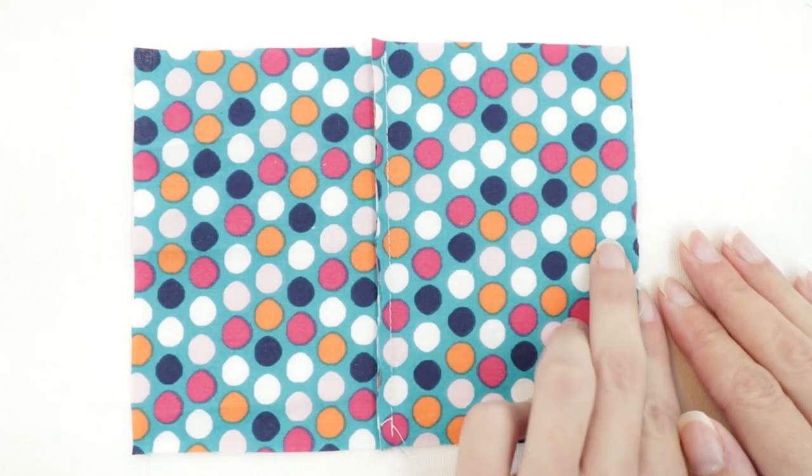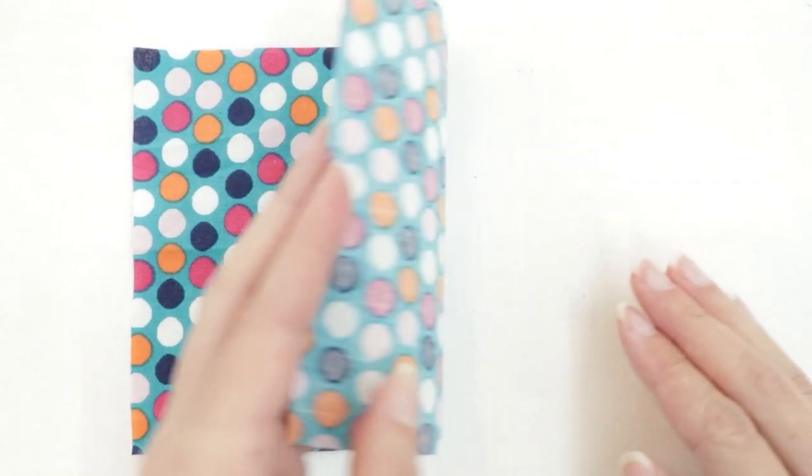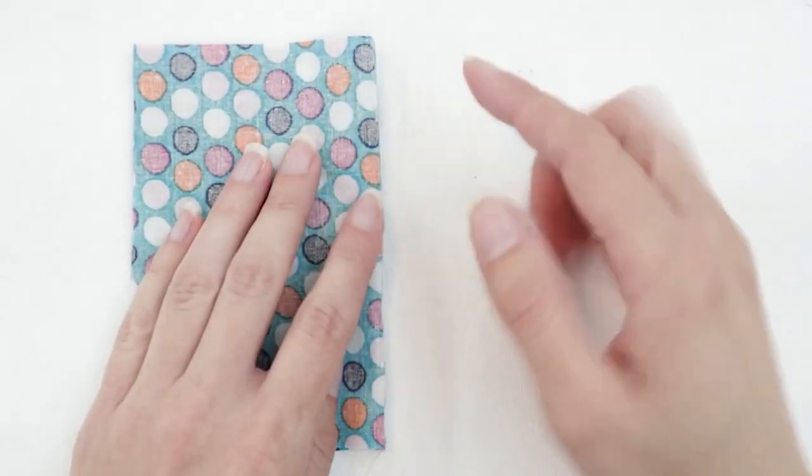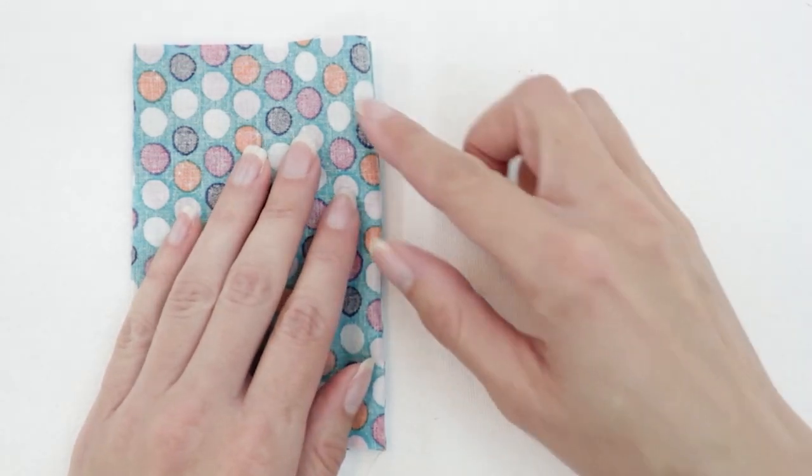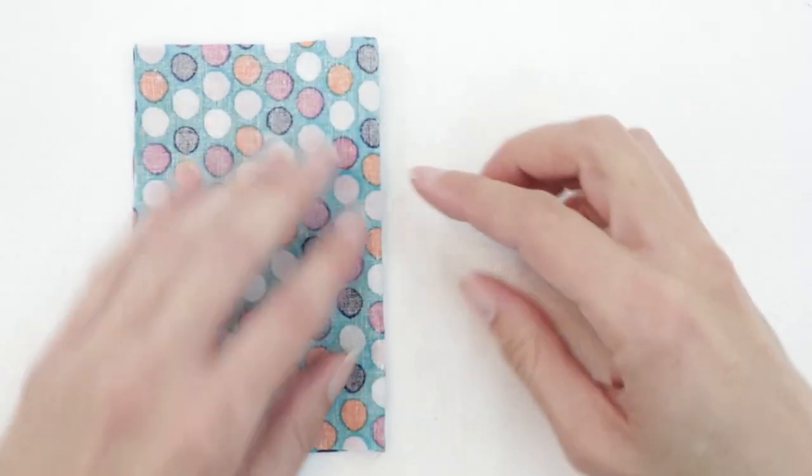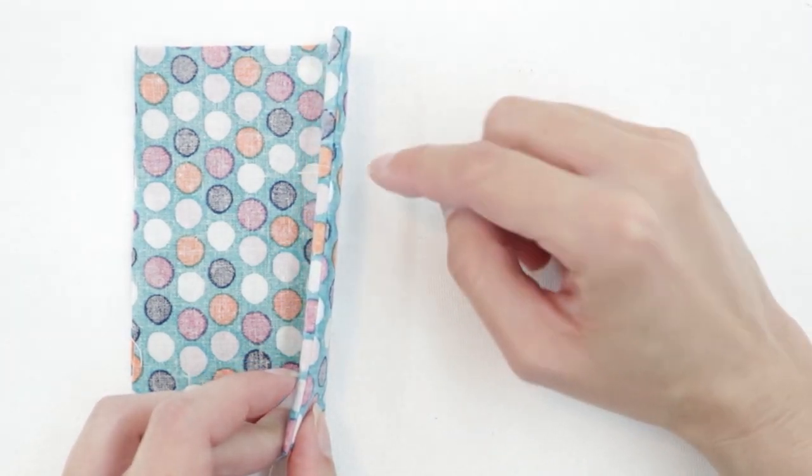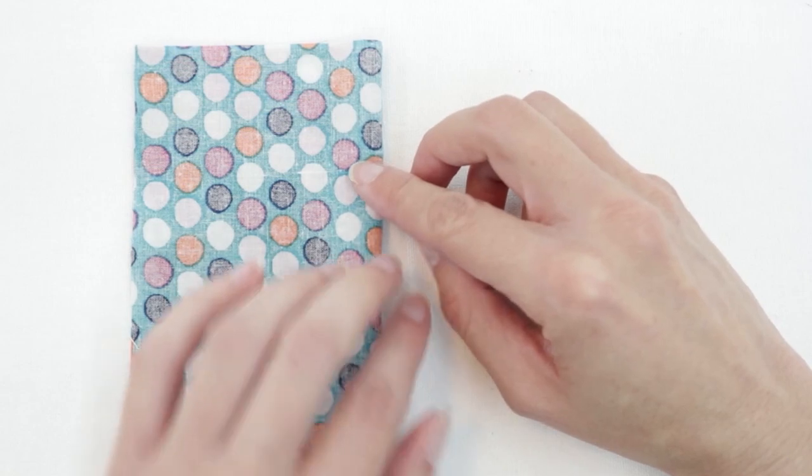Then I'm going to take my fabric and turn it so that right sides are together. You want to be really careful to make sure you're turning it exactly on your stitch line. You want the stitches to be all the way on the edge of the fabric. You don't want anything tucked down inside or folded in.